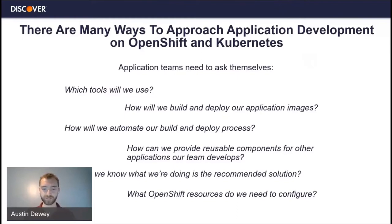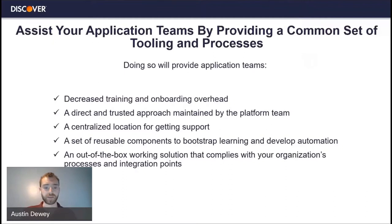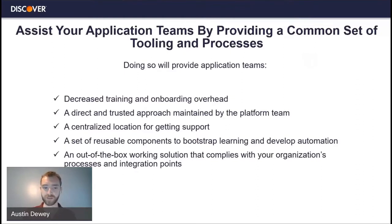You want to provide something for them so they can hit the ground running and become productive on the platform as soon as possible. Two more questions: how do people know what they're doing is the recommended solution when they're new to the platform? How do they know what they're doing is actually best practice? And what OpenShift resources do we need to configure? If you're familiar with OpenShift and Kubernetes, you know there are a lot of resources — deployments, services, routes. As a member of an OpenShift operations team or a DevOps team, it's your job to provide a set of common tooling and processes for application teams, which decreases the training overhead for getting acquainted with the environment.